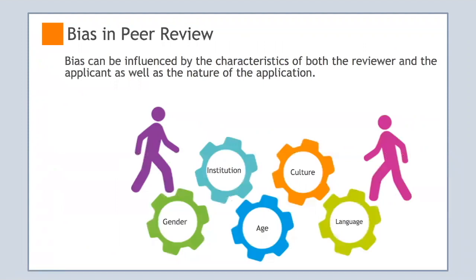There are many types of unconscious bias that affect our daily lives, and this is no different in the peer review process. The types more likely to appear in peer review include gender bias, institutional bias, age bias, culture bias, and language bias. Bias can be influenced by the characteristics of both the reviewer and the applicant, as well as the nature of the application and where the research is being conducted and by whom. It is important to note that bias may not only be towards someone with different characteristics than you, but also towards someone with the same characteristics — for example, female reviewers can be just as unconsciously biased against female applicants as male reviewers.